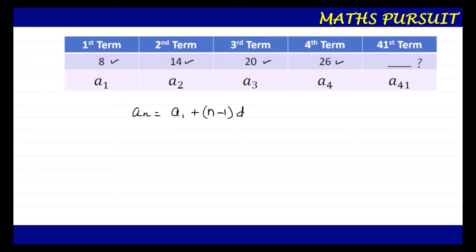d here is the common difference. d is equal to the difference between two consecutive terms. I am taking d = a_2 − a_1. You can also consider d = a_3 − a_2 or a_4 − a_3 — whatever way we take, we will get the same answer. So a_2 is 14 minus a_1 which is 8, giving us 14 − 8 = 6. So d = 6.